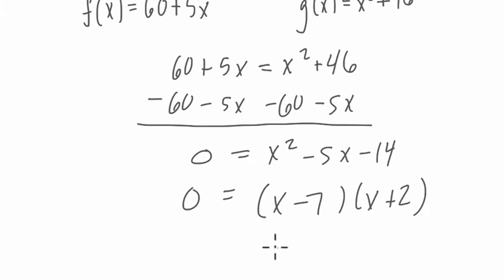Now the product of these two is 0. That'll happen when x is 7 because 7 minus 7 is 0, and 0 times 9 is still 0. The other time that happens is when we have x is negative 2. So negative 2 plus 2 is 0, and negative 2 minus 7 is negative 9, so the whole product is 0.